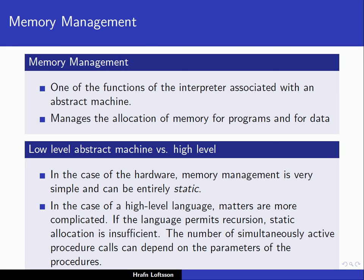So, memory management — why is that needed? This is one of the functions of the interpreter associated with an abstract machine: to manage the memory needed at runtime. The underlying abstract machine needs to manage the allocation of memory for programs and also for the data. If you recall our diagram for an interpreter from the beginning of our course, memory was divided between memory for the running program and memory needed for the data used by the program at runtime.